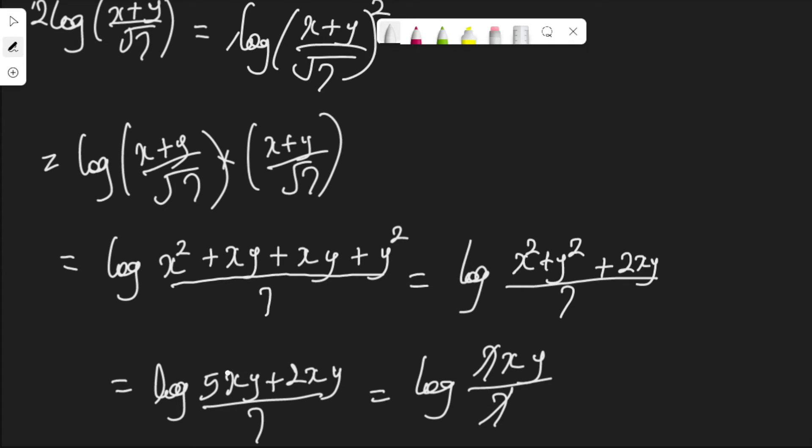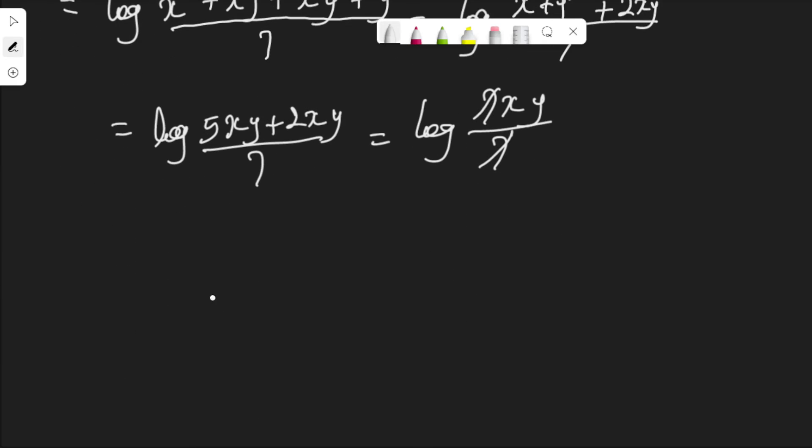7 will cancel. We are therefore left with log xy. Then, apply the log rule that says log pq is equal to log p plus log q. We apply the log here. Log xy is equal to log x plus log y.